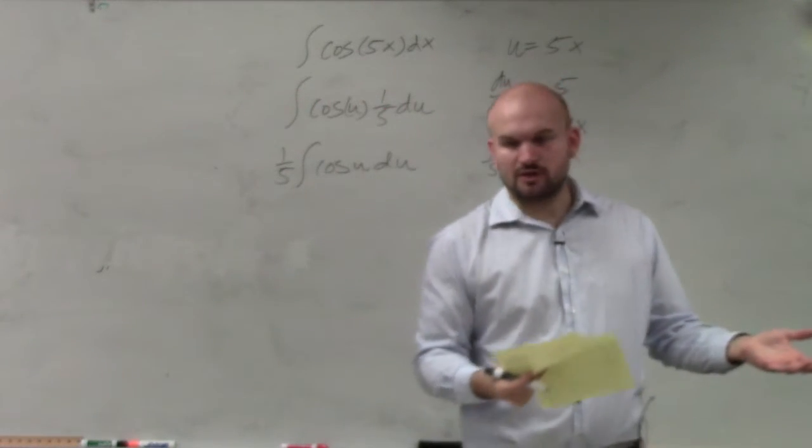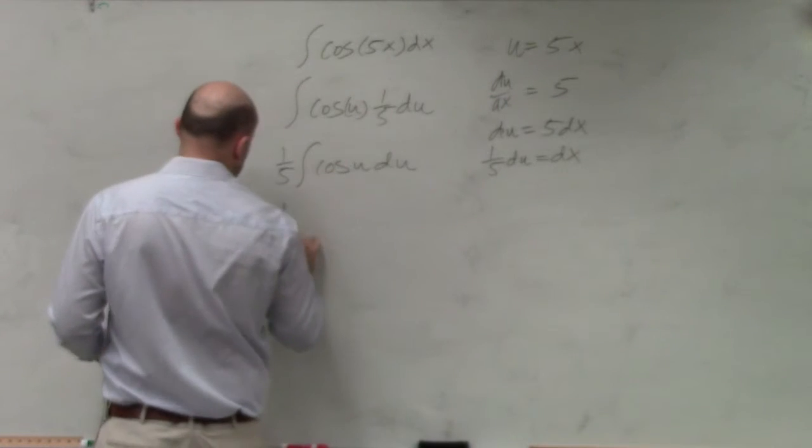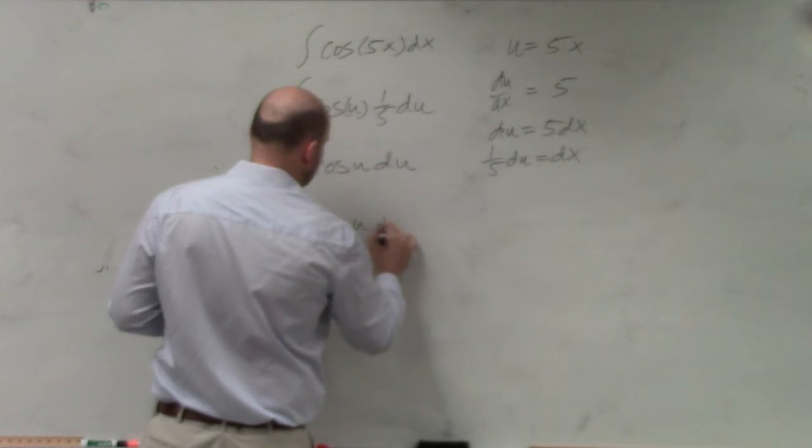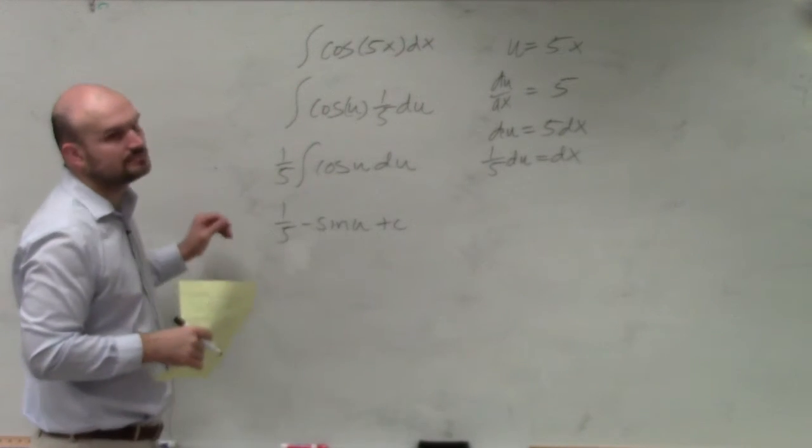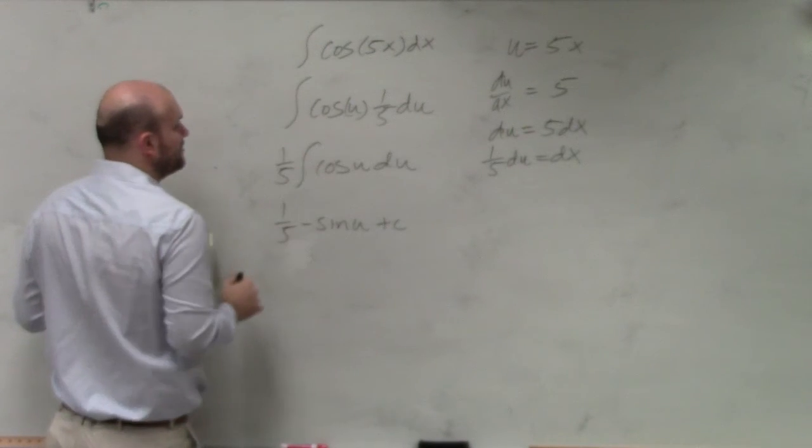And well, now I can take the integral of cosine of u, which is going to be my negative sine. Negative sine of u plus c. And then I can just put back in my 5x.